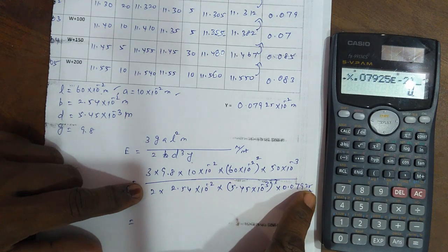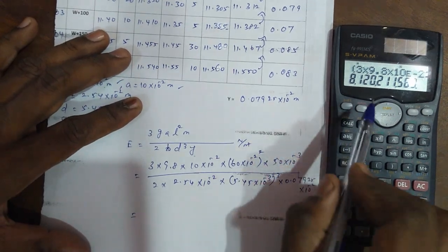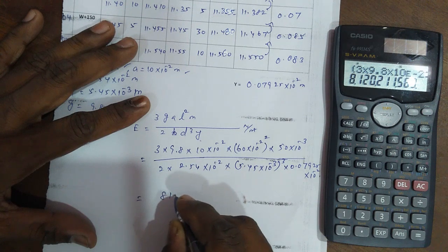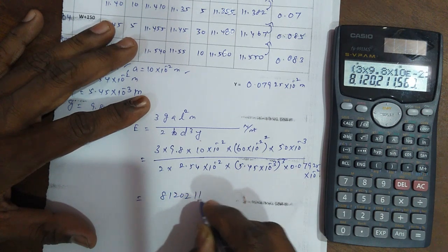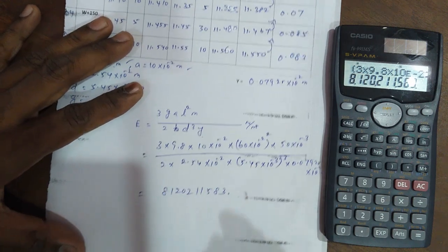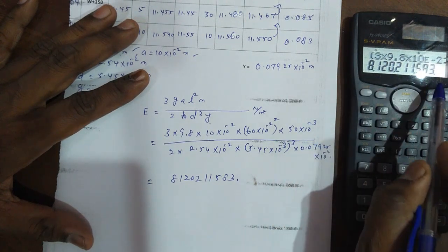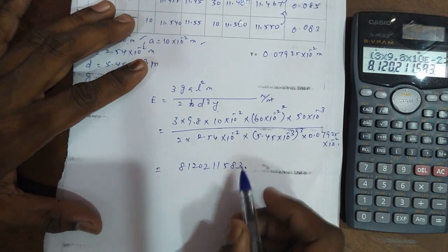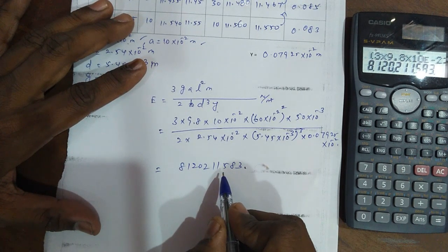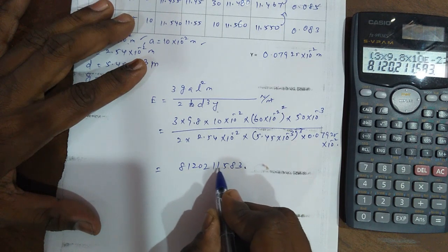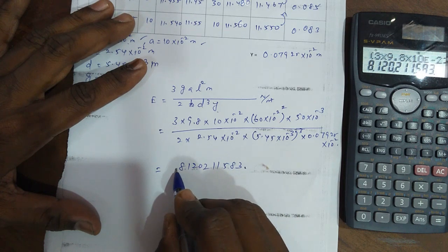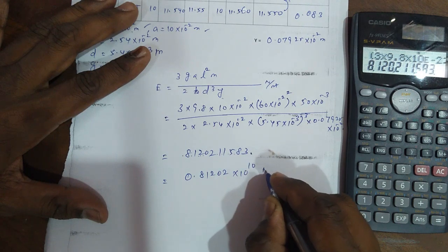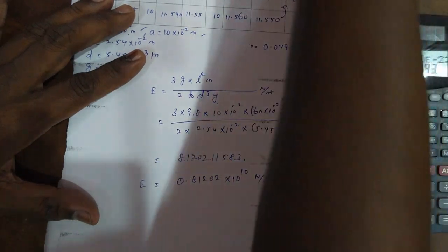The answer is, don't take comma values, the point is here. Write all values 8 1 2 0 2 1 1 5 8 3, then point here. The pointer increases more easily, then point value's power values increase positively. Like plus 10 to the power of plus 10 values. So the answer is 0.8102 times 10 to the power of plus 10 newton per meter square. This is the final answer.